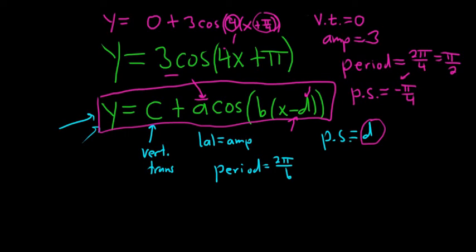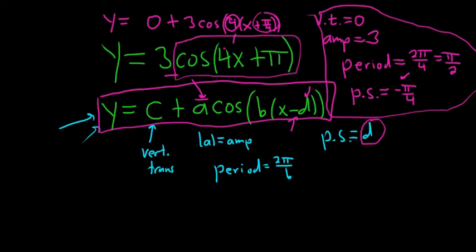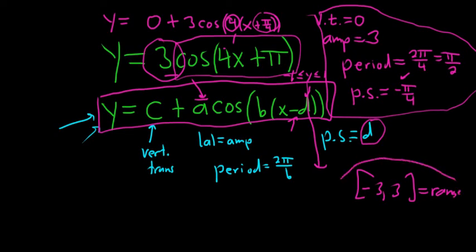And last but not least is the range. So to find the range, always start with the range of cosine. So cosine by itself has a range between negative 1 and 1. So the y value is between negative 1 and 1. But then when you multiply it by 3, it's going to change from negative 3 to 3. So the range here would be negative 3 to 3. So I hope this video has been helpful. That's it.